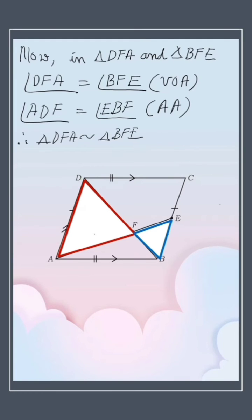We know that in similar triangles, corresponding sides are in proportion. So now let us identify corresponding sides. DF and BF. So DF by BF is equal to FA by FE.